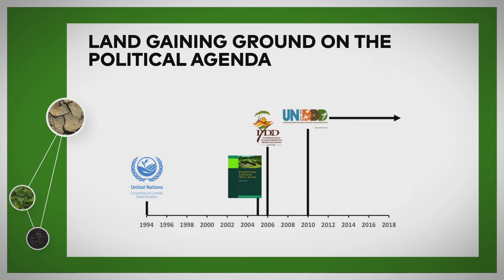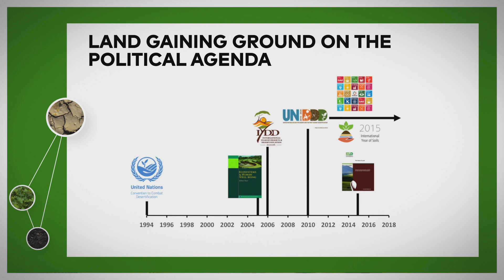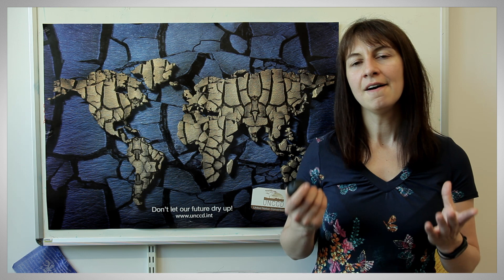All of these activities and events helped to raise the profile of land issues globally. Fast forward to 2015, and things had really taken off. 2015 saw the publication of a report called The Value of Land, developed by the Economics of Land Degradation Initiative. It drew attention to the costs of land degradation, and showed policymakers what they were missing out on if they didn't act to address degradation — considering both the costs of particular actions and the costs of inaction. At the same time, 2015 was the International Year of Soils, with many activities around the world drawing attention to the soil component of land.